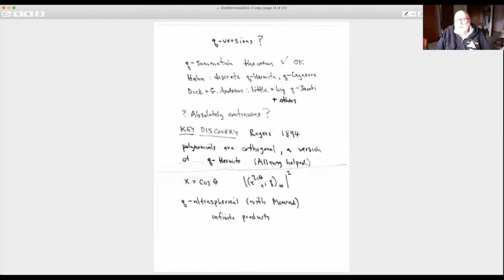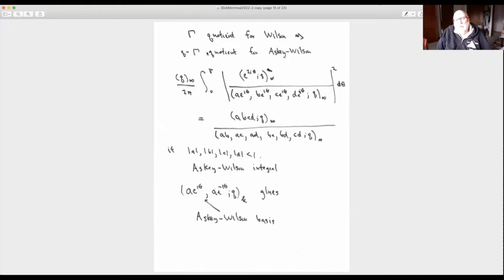It led to this work that Dick did with Mourad on Q ultraspherical, where you add some more infinite products to the measure. Some inkling here of maybe you can move up this chain for absolutely continuous things. That gamma quotient that Wilson had for the Wilson polynomials, you could think of having some kind of a Q gamma quotient. Somehow, maybe by knowing what the Askey-Chihara polynomials are, they came up with this would be a good measure. And they needed to know what the total mass was.